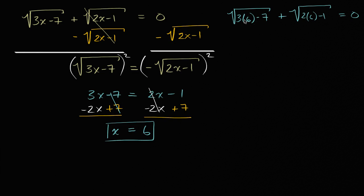Three times six minus seven, so this is going to be the square root of 11 plus the square root of 11, needs to be equal to zero, which clearly is not going to be equal to zero. This is two square roots of 11, which does not equal zero. So this does not work.